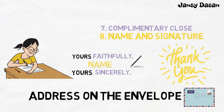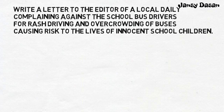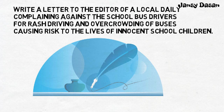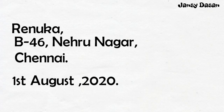Let's see a sample formal letter — here is a complaint letter. The question is: Write a letter to the editor of a local daily complaining against the school bus drivers for rash driving and overcrowding of buses, causing risks to the lives of innocent school children. The name and address is given; you are supposed to write only the name and address given in the question paper. First, the sender's detail: Renuka, B46, Nehru Nagar, Chennai. Punctuation marks are very important in letter writing. Second, the date — the most appropriate way: 1st August 2020.